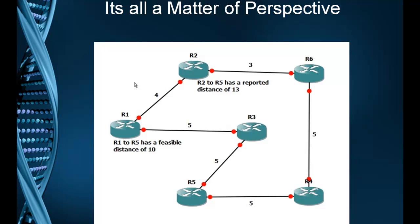Why are they named differently? Because there's a condition later on that takes both of these two different numbers and puts them together, and that's why they have to be named differently. So make sure you understand that from your router, or the local router, the best path to the destination is the feasible distance. And anybody else's feasible distance that gets reported to you is referred to as reported distance — always what's reported from a neighboring router, and feasible distance is always your best path, your best cost.